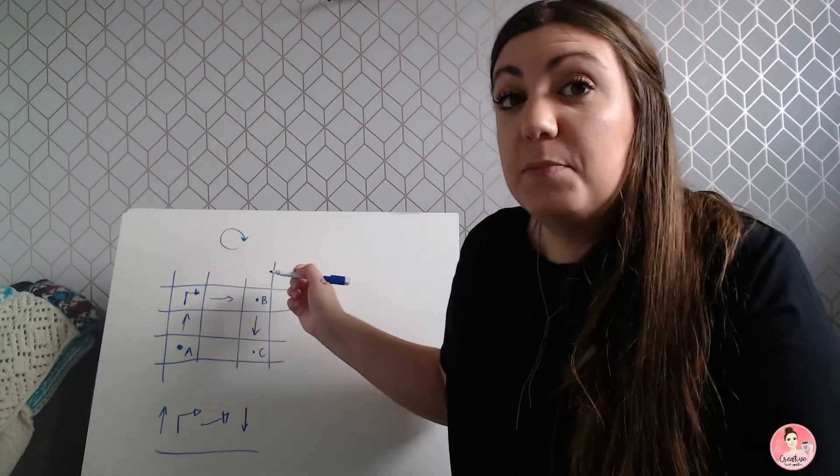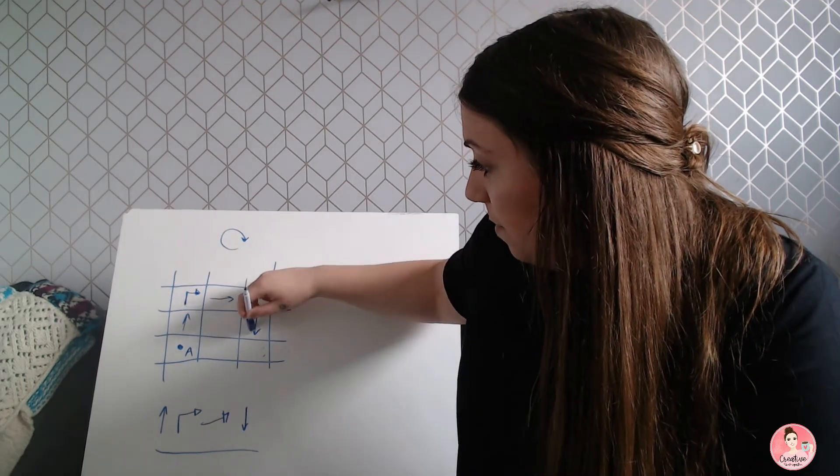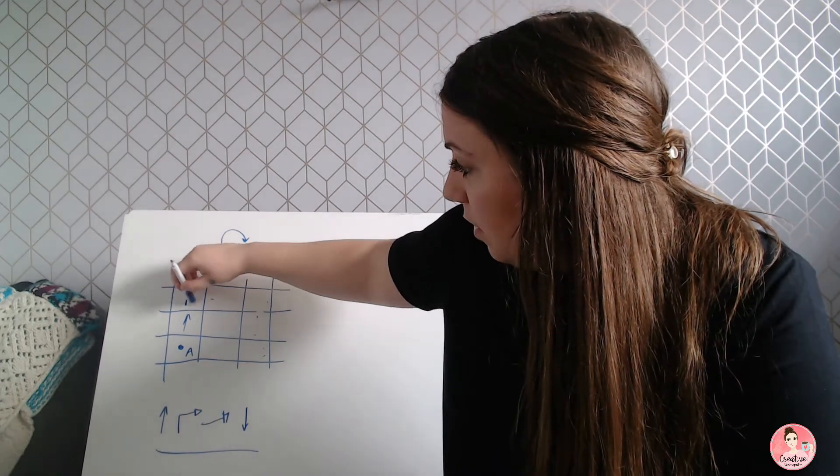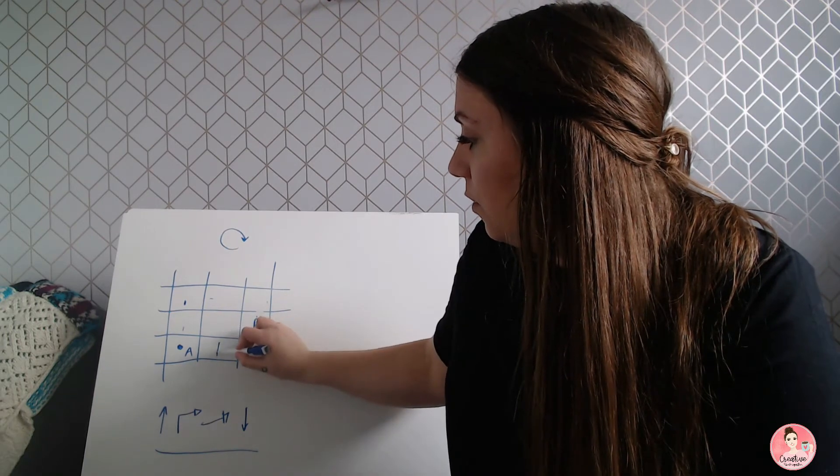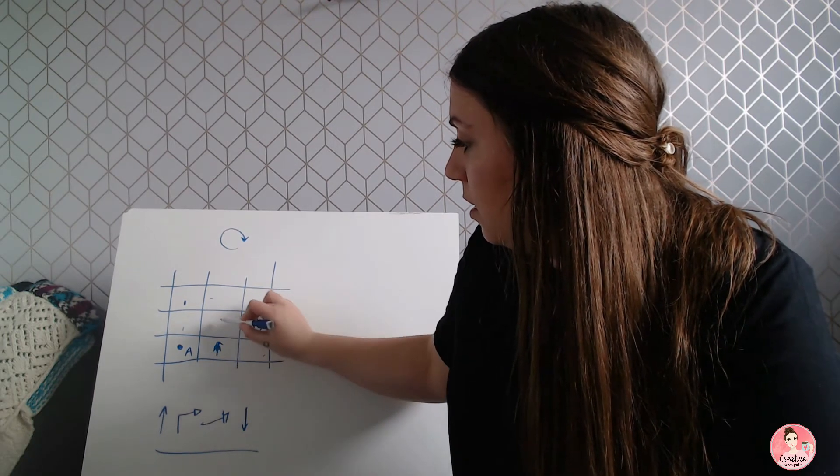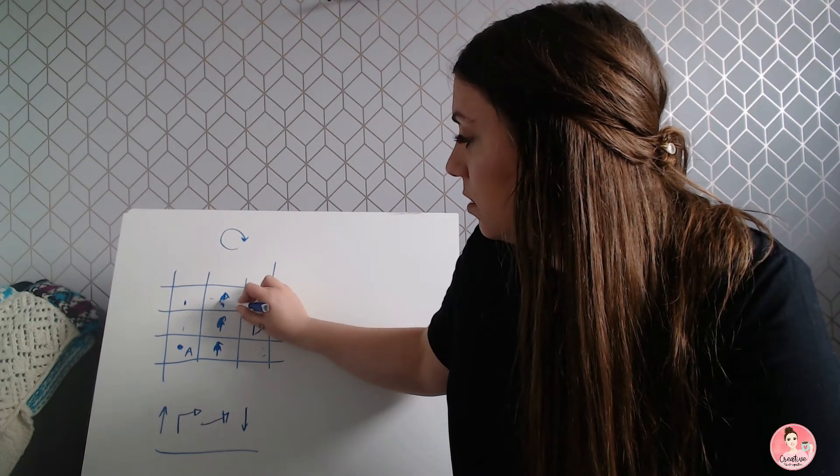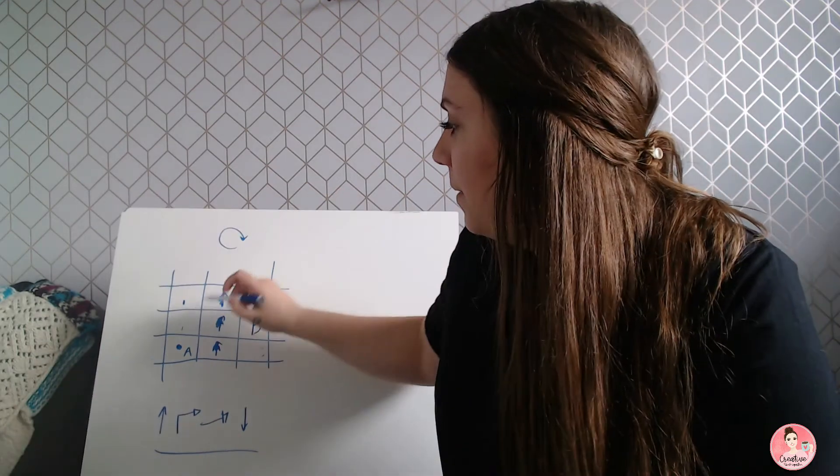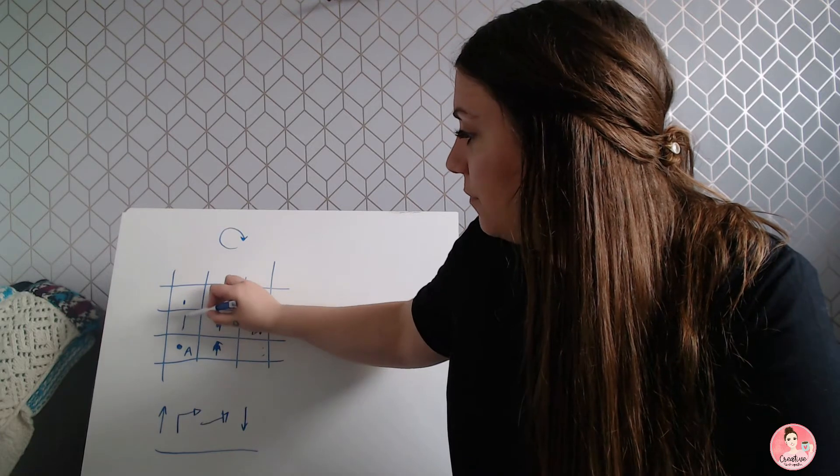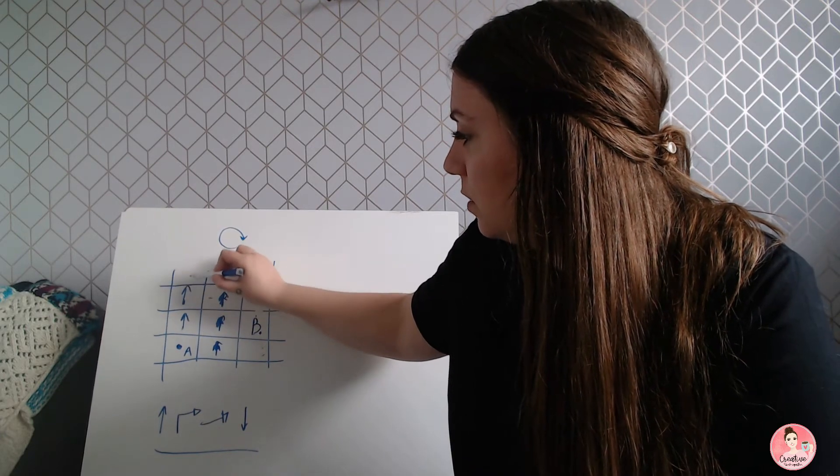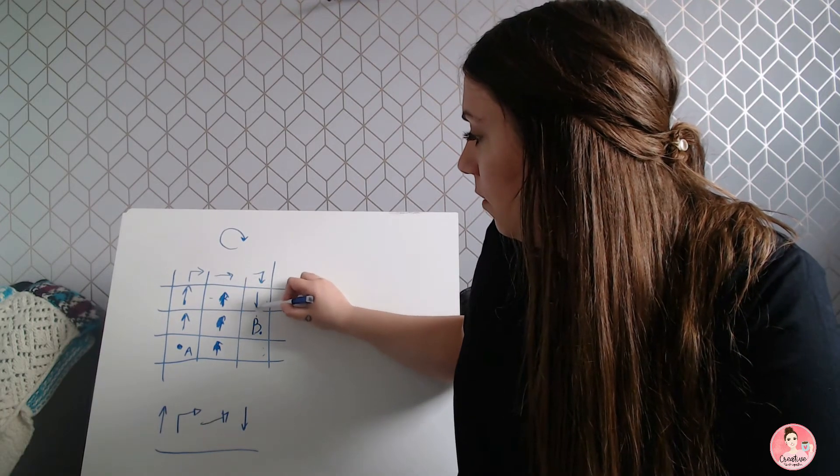That is basically unplugged coding. Again you can make it a little bit more complicated if you want to. Making it bigger would be one way or you can add obstacles. So let's say you're starting at A but you need to get to B that's over here but there's a tree in the way here and a tree in the way here and one in the way here. These are my trees. They're pine trees. But then they can't just code directly to point B by going direct. They have to go around the pine trees and so you're coding around the obstacles.